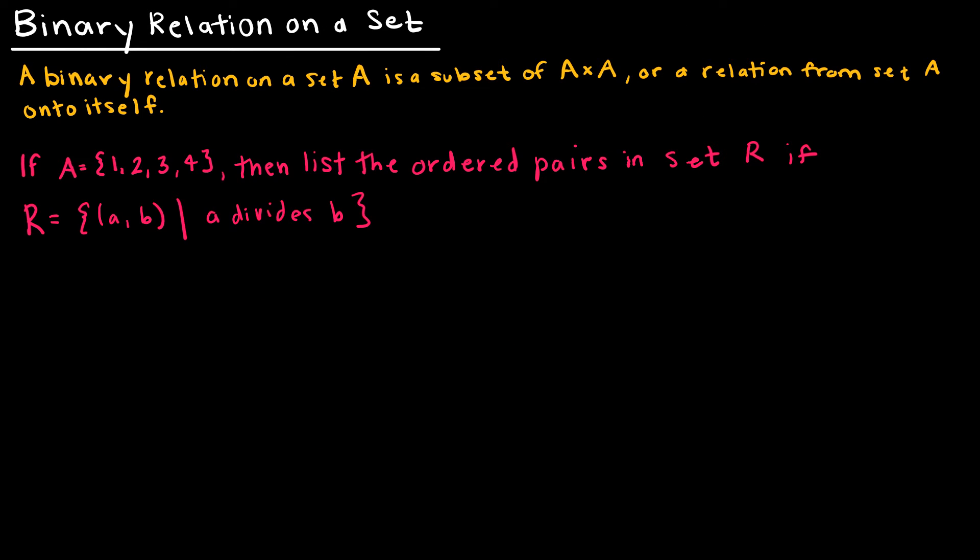Now let's look at what happens when we have a set upon itself. So instead of A in a relation with B, now we've got a relation from A to A. So A in this case is going to be 1, 2, 3, 4.